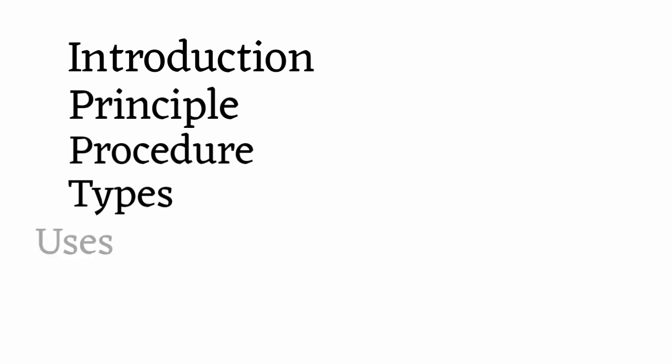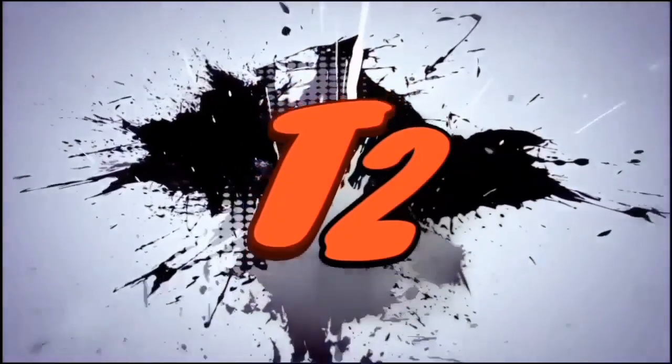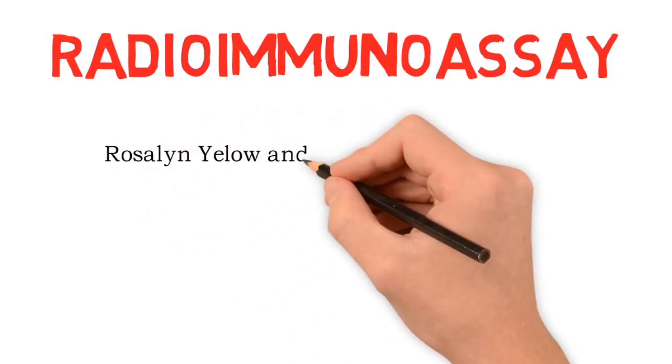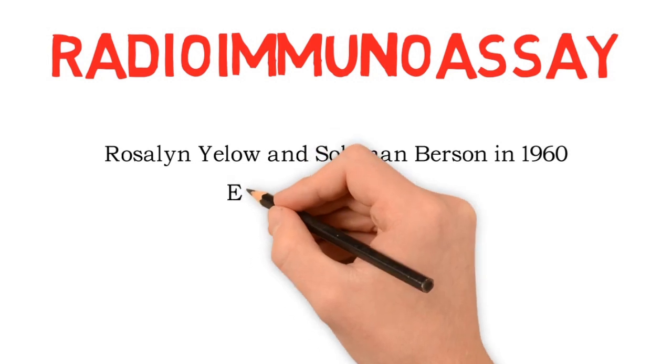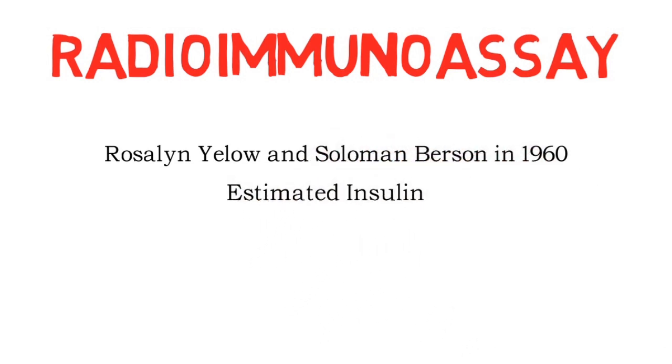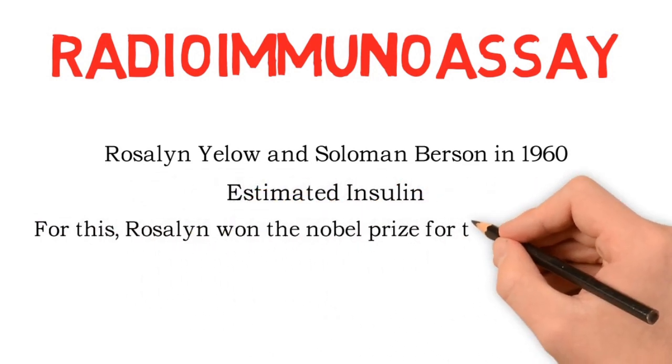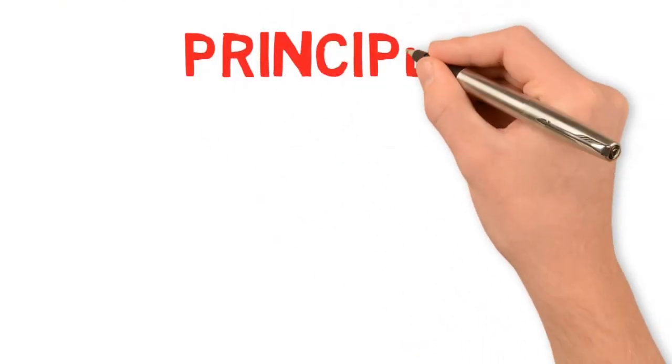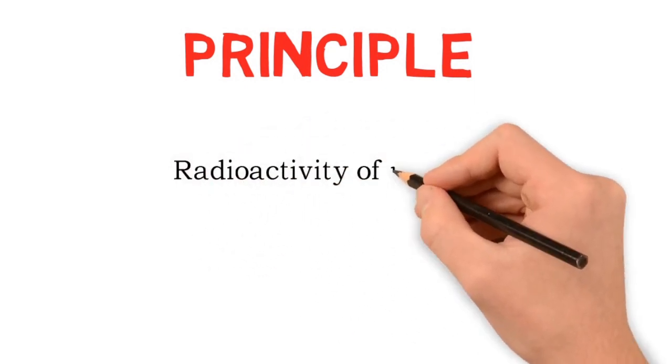So let's start. This technique was first developed by Rosalind Yalow and Solomon Berson in 1960. The first substance estimated by this technique was insulin. For this, Rosalind won the Nobel Prize in 1977.